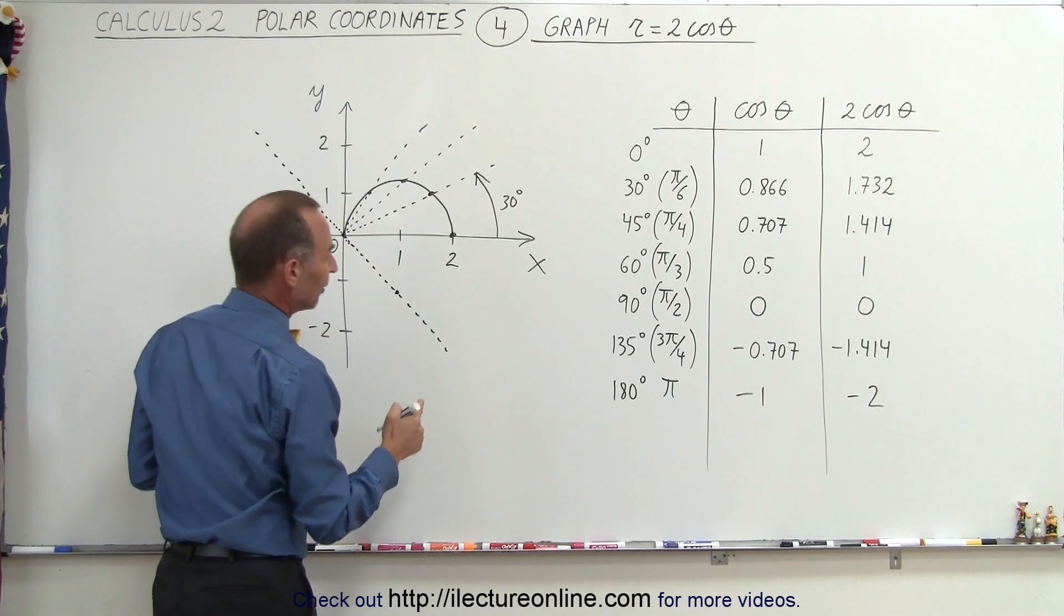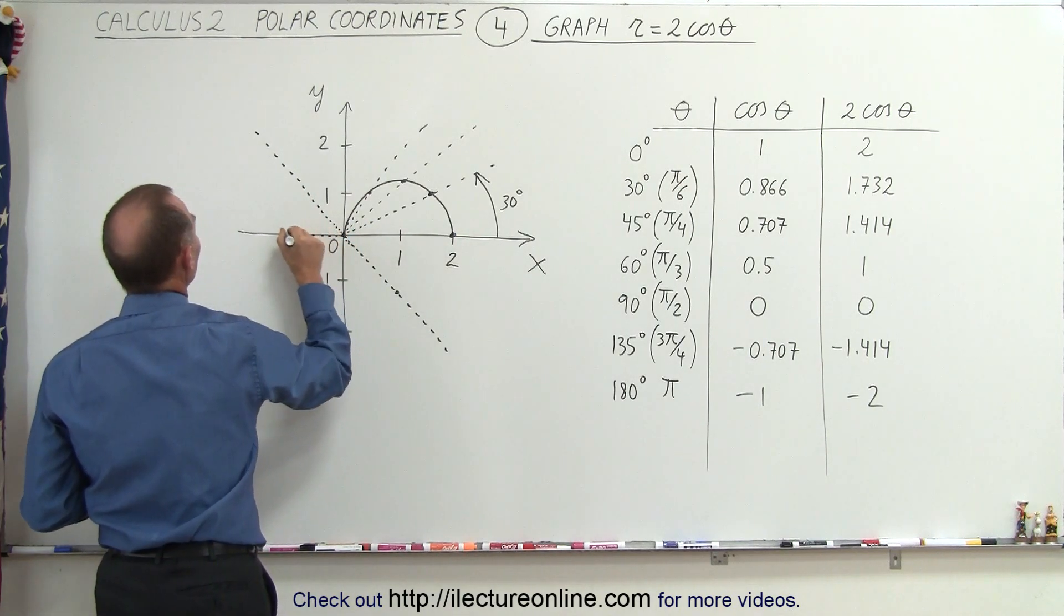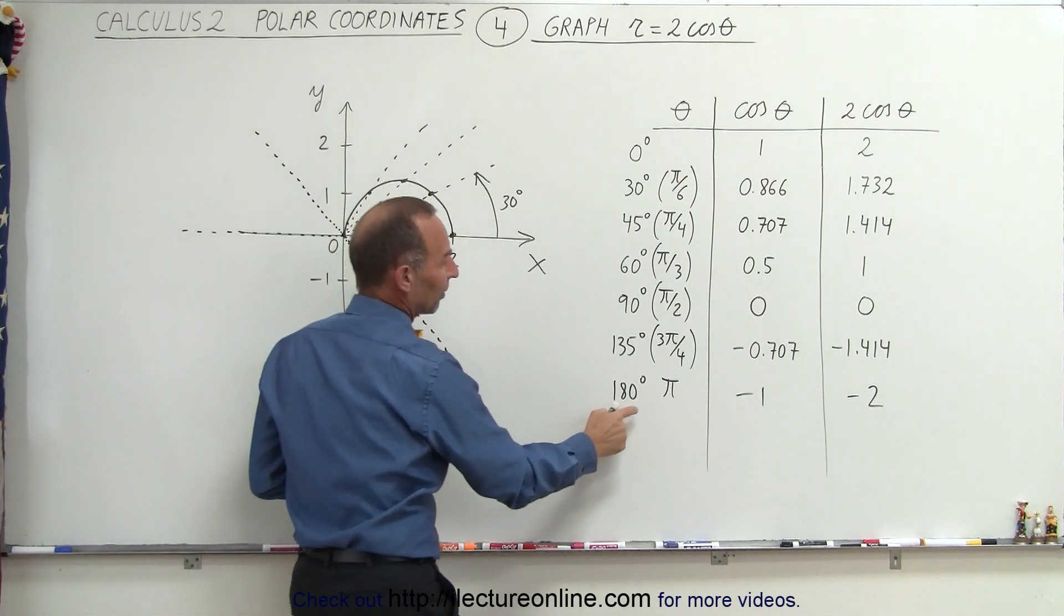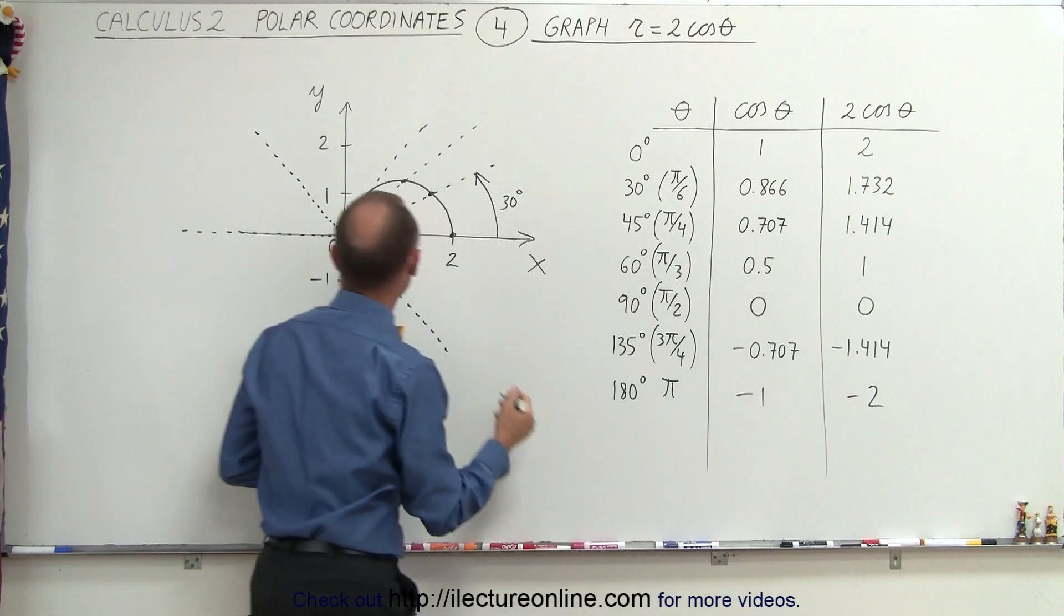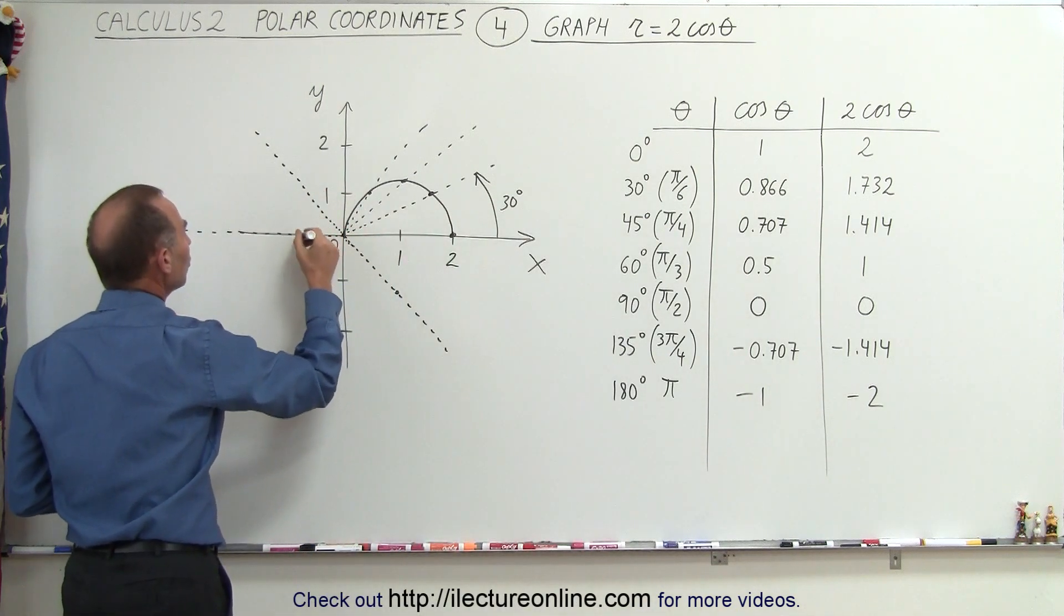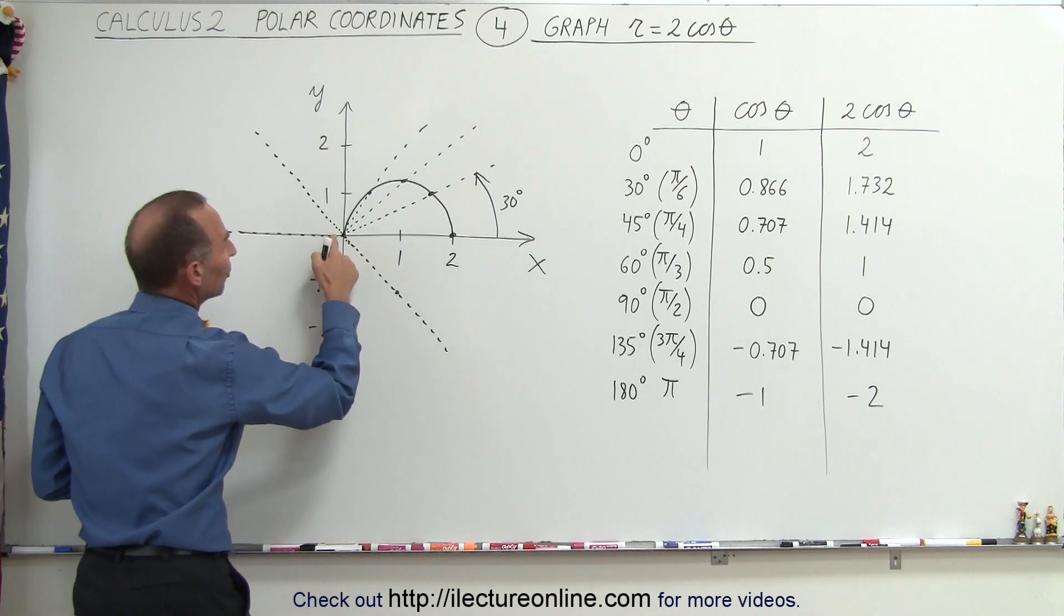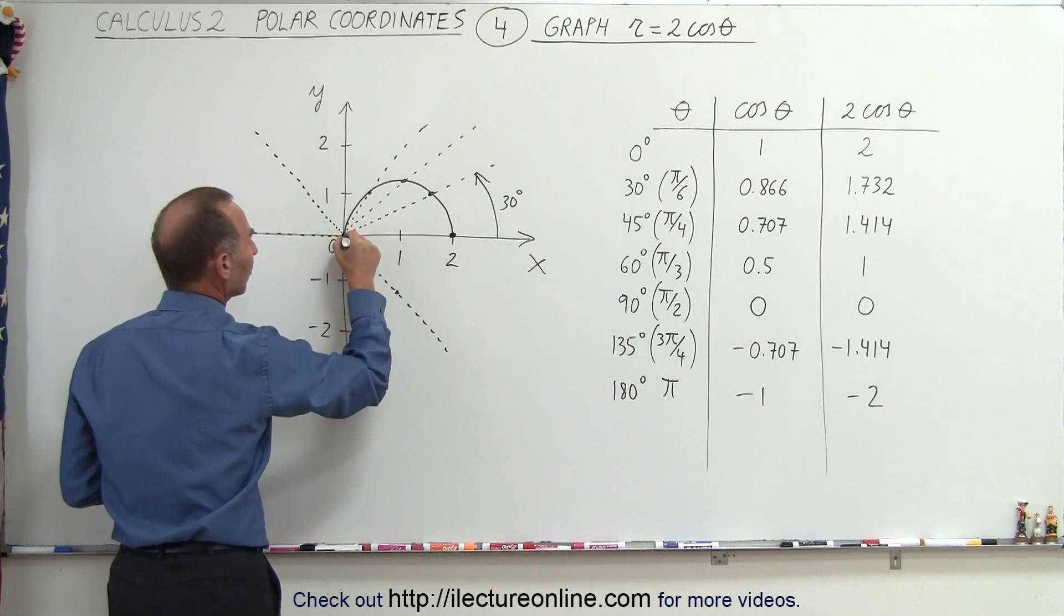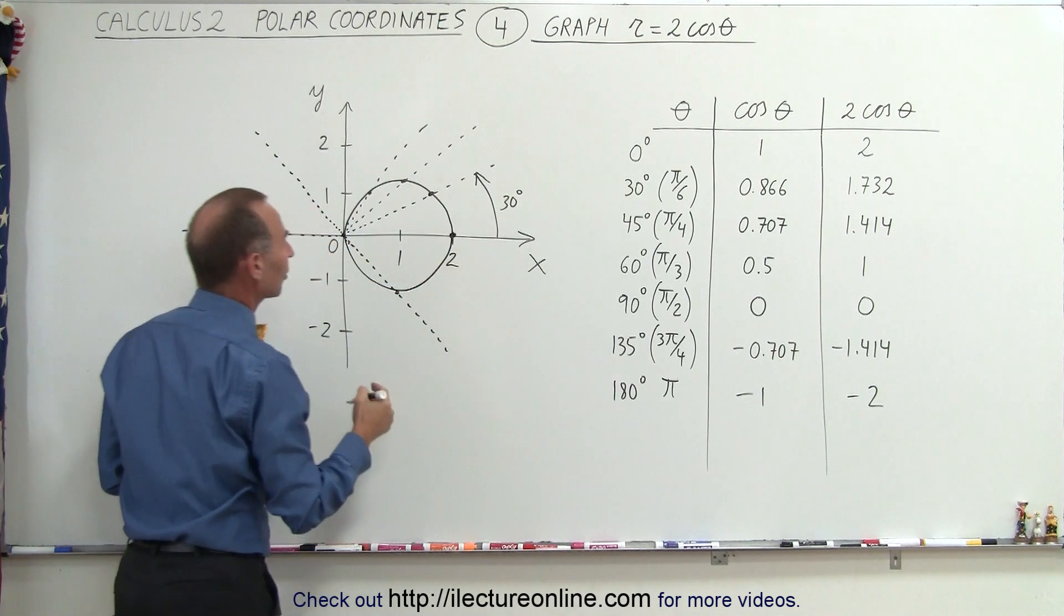And then, if we then go another 180 degrees, so now we're moving in the negative x direction, so we have a line in that direction, notice that the cosine of that is minus 1, twice that is minus 2. So instead of going 2 units in the negative direction, we have to flip that over, because it's negative 2, we go 2 units in the positive direction, and we end up back over here. And then if we connect those dots, you can see that we have the other half of the circle.